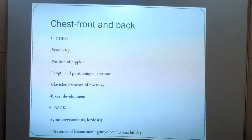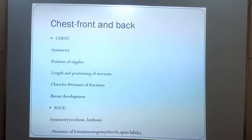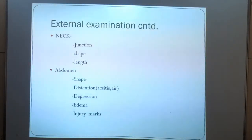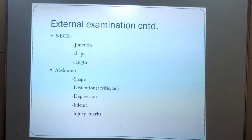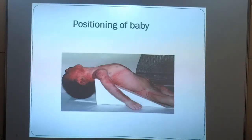Regarding the back, symmetry, scoliosis, lordosis or presence of lesions such as myelomeningocele or spina bifida should be noted. In the neck, the junction, shape and length are assessed. In the abdomen, any distension, depression, edema or injury marks should be noted.